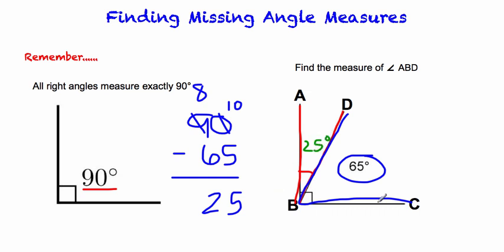You can check your work with these by adding those numbers together. Does 65 plus 25 equal 90? Well, yes it does, so then you know that you did your math correctly.